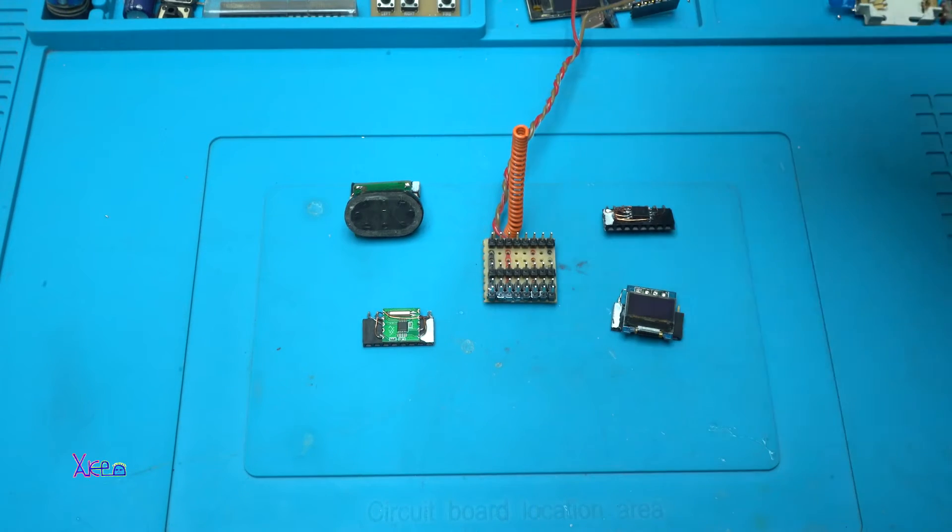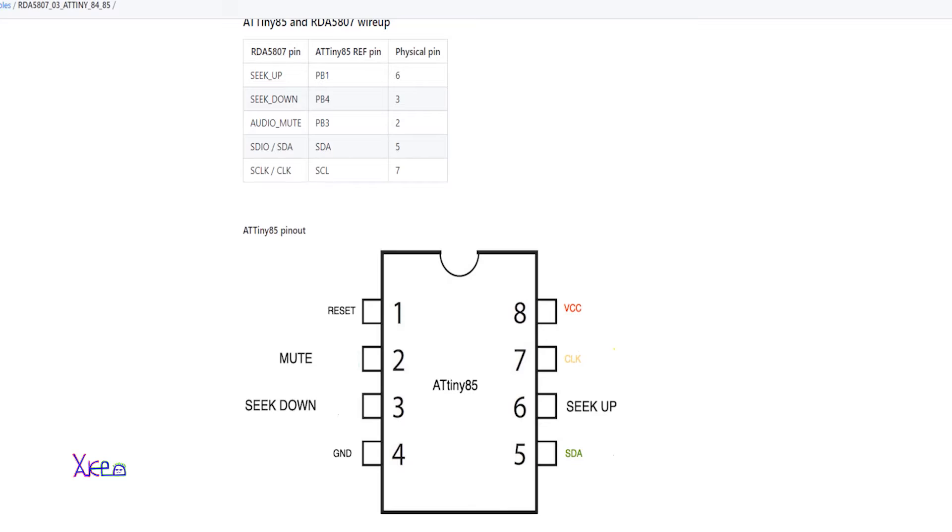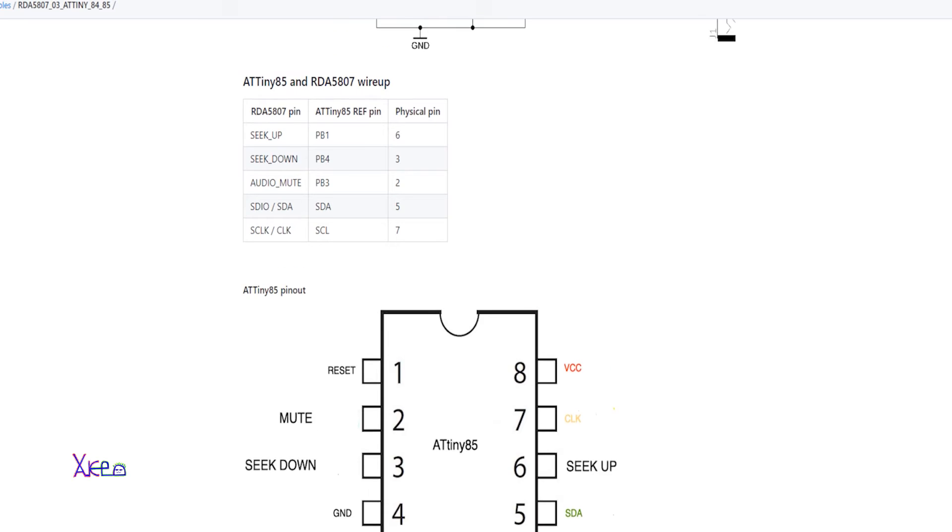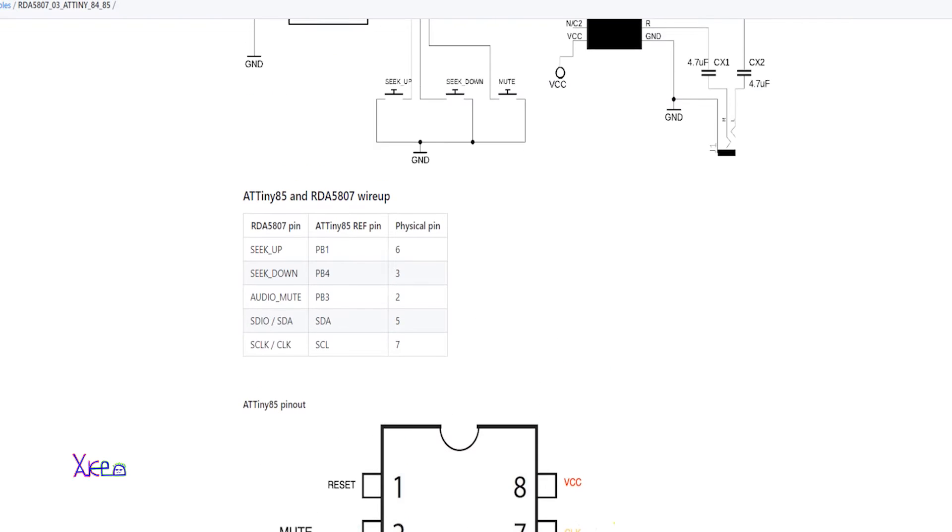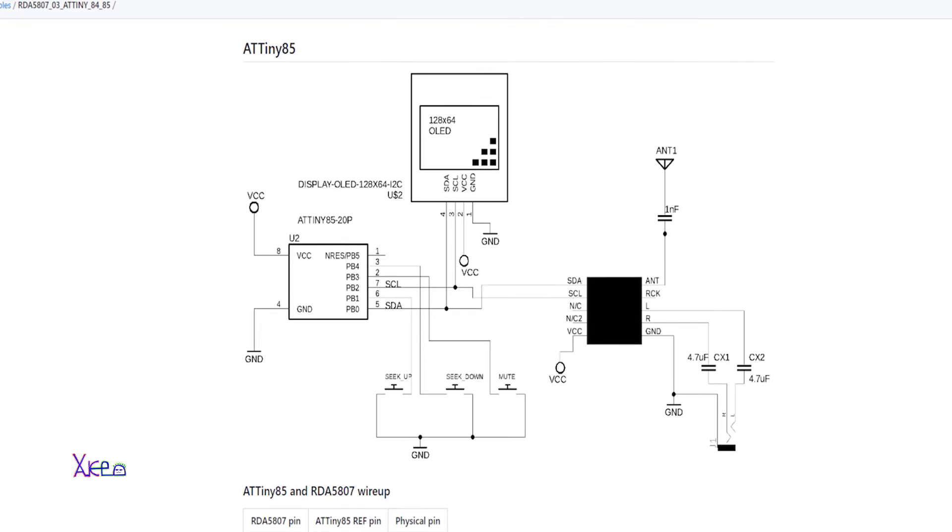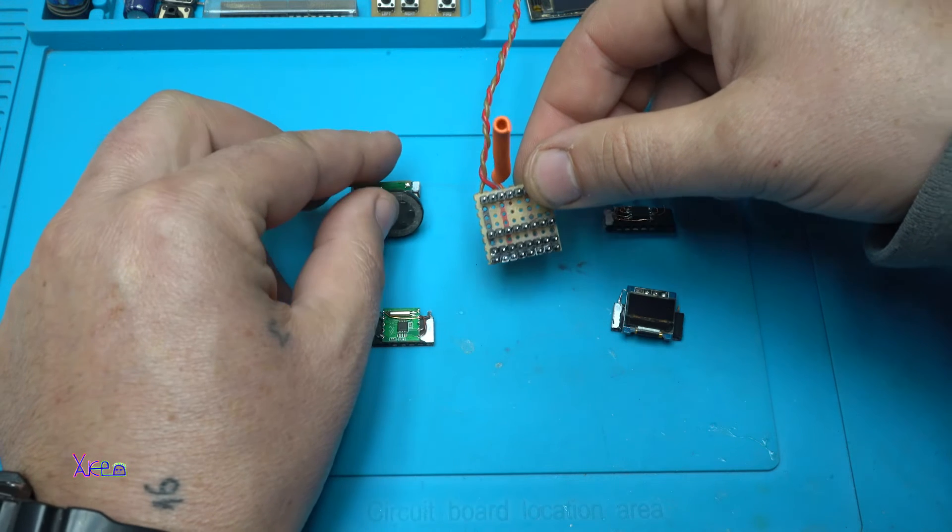In the description below, I will attach a link to a website where you can download the code and schematic for ATTiny85 or ATTiny84 microchip. You can see on the circuit diagram how everything is connected, the microchip with the OLED screen and with the radio model.